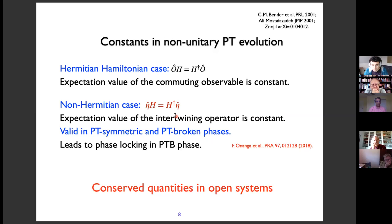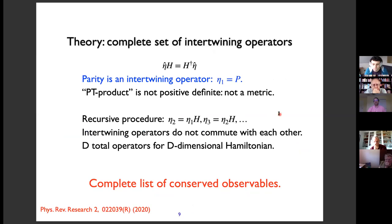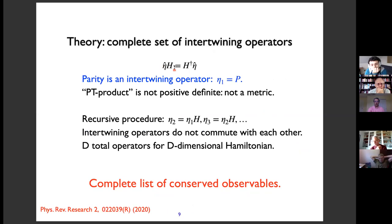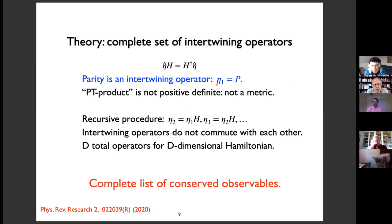In the PT broken region, the norm of a state grows with time. And indeed, if we put η = identity, this equation is not satisfied — confirming the norm should not be constant. So identifying these η operators gives you the constants of motion in open systems. The question is: what are these η operators and can we figure them out? There has been a lot of work in this field. What we contributed for finite-dimensional cases was a recipe for identifying these intertwining operators. You can check very easily that for a broad class of PT symmetric non-Hermitian Hamiltonians, parity itself is an intertwining operator.